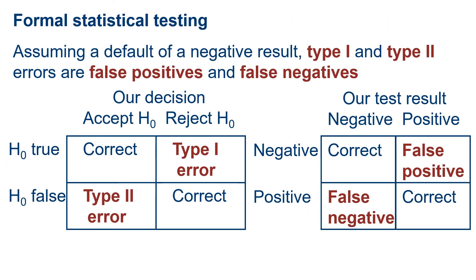When we do formal statistical testing, we look at the null hypothesis and alternative hypothesis. The null hypothesis is either true or false, and we make a decision, after analyzing our data, to either accept or reject the null hypothesis. Strictly speaking, we don't reject the null hypothesis — we just fail to accept it. When the null hypothesis is true and we accept it, or when it's false and we reject it, then we've made the correct decision.